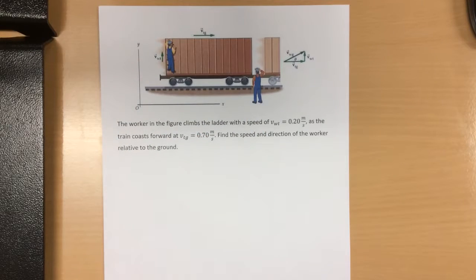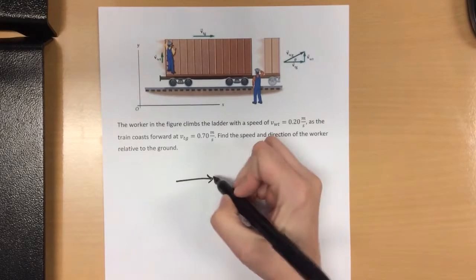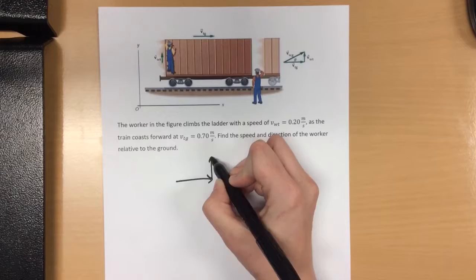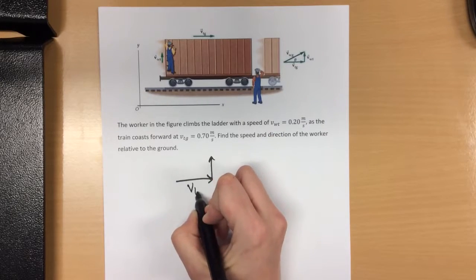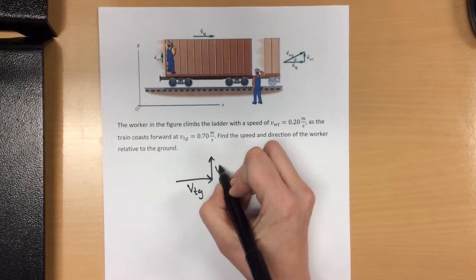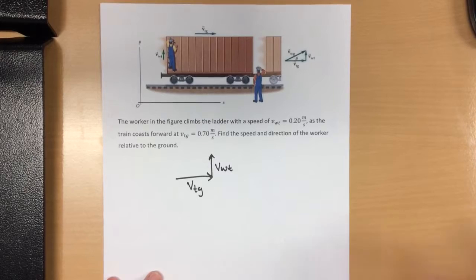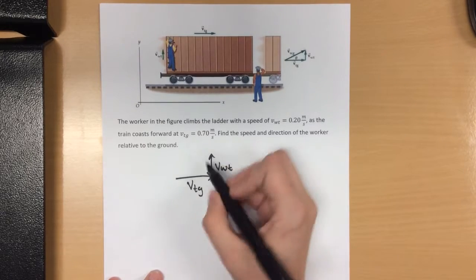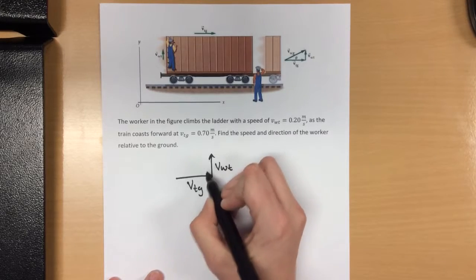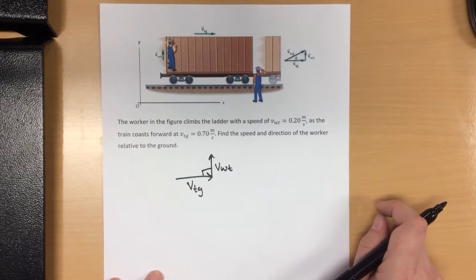We see our train moving across, we see our worker moving straight up. We're actually adding these two vectors together to get the speed of our worker relative to the ground. We see across and we see up. Well, these two vectors are perpendicular to each other.